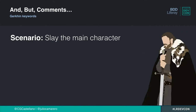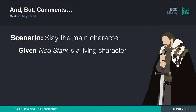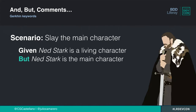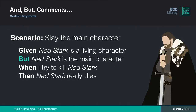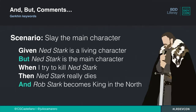When you are using this in real life, you will find more complex examples than the one with Cersei, and you may need to add more details to your tests. Cucumber provides other keywords you can use. For example, a more complex scenario — 'slay the main character': given Ned Stark is a living character, but Ned Stark is the main character. Note the 'but' there. When I try to kill Ned Stark, then Ned Stark really dies, and Robert Stark becomes the king in the north. You can see there are two outcomes using 'and'.